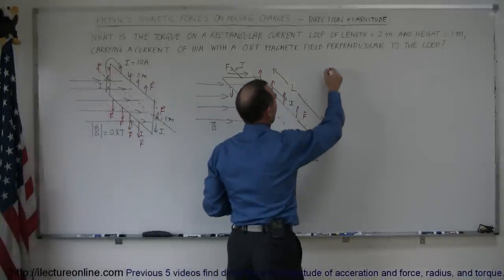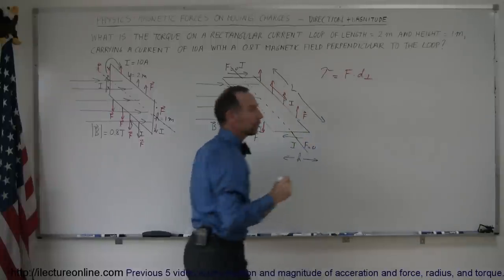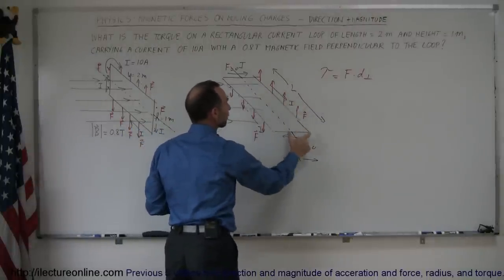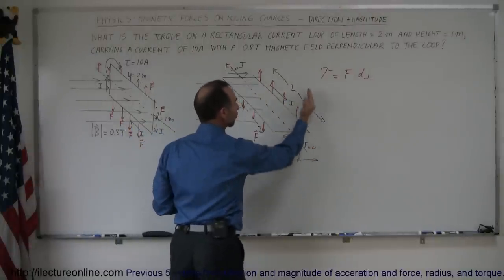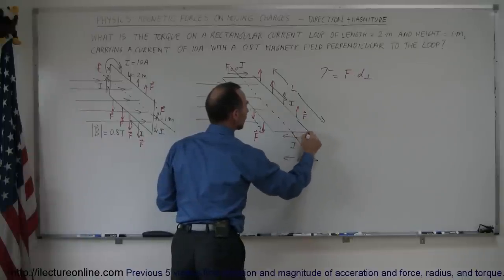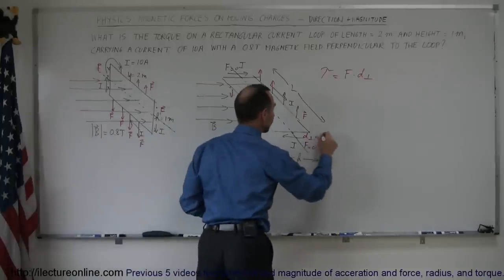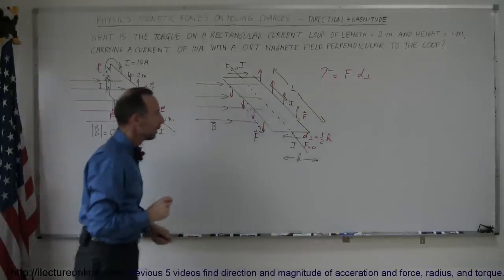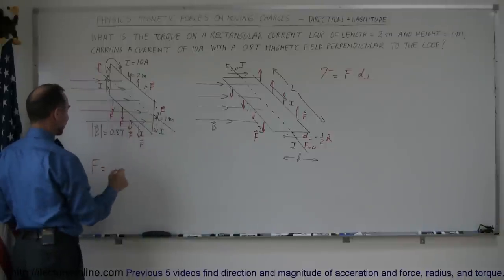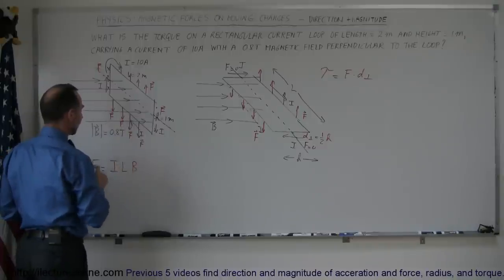The torque, by definition, is equal to the force times the perpendicular distance — that is, the force pushing against the wire times the perpendicular distance from the line of action of the force to the point of rotation, which is half the height of the loop, equal to one half H. The magnitude of the force on a current carrying wire, as learned in the previous video, is F = ILB: current times the length of the wire times the strength of the magnetic field.